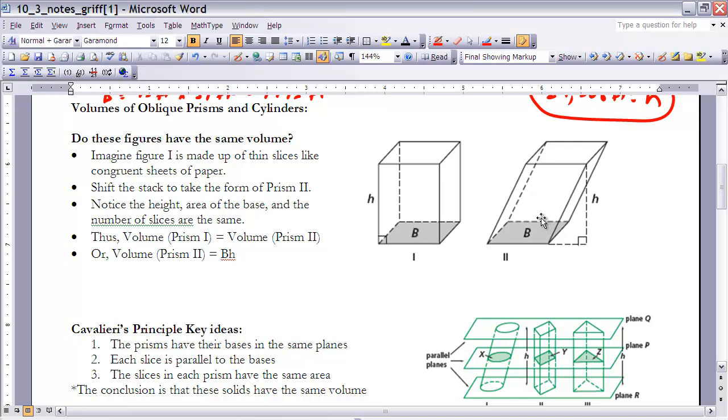Now, if that's the case, the volume of prism 1 and the volume of prism 2, we haven't taken any sheets of paper out, so they would still represent the same thing. So if they have the same volume and we know the volume of prism 1 is the base times the height, well, then that must occur for the volume of prism 2 as well, which basically leads to the idea of Cavalieri's Principle.